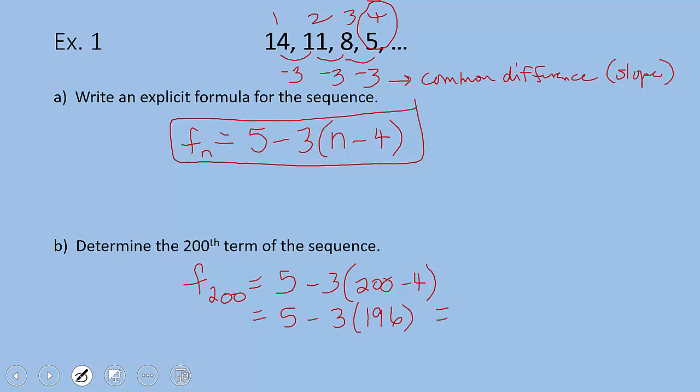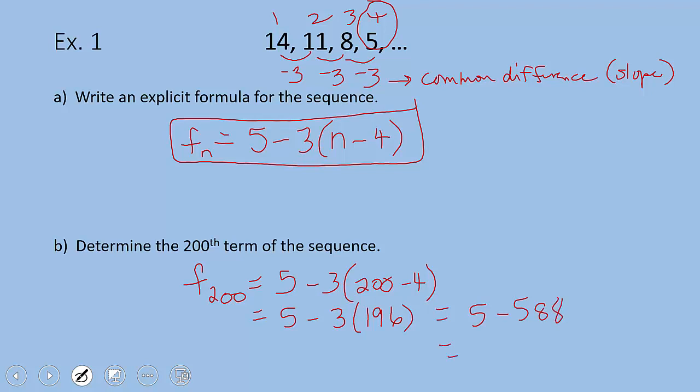We'll do our arithmetic, 5 minus 3 times 196. I'm grabbing my calculator for this one. So 3 times 196, I have 5 minus 588 and that is negative 583.